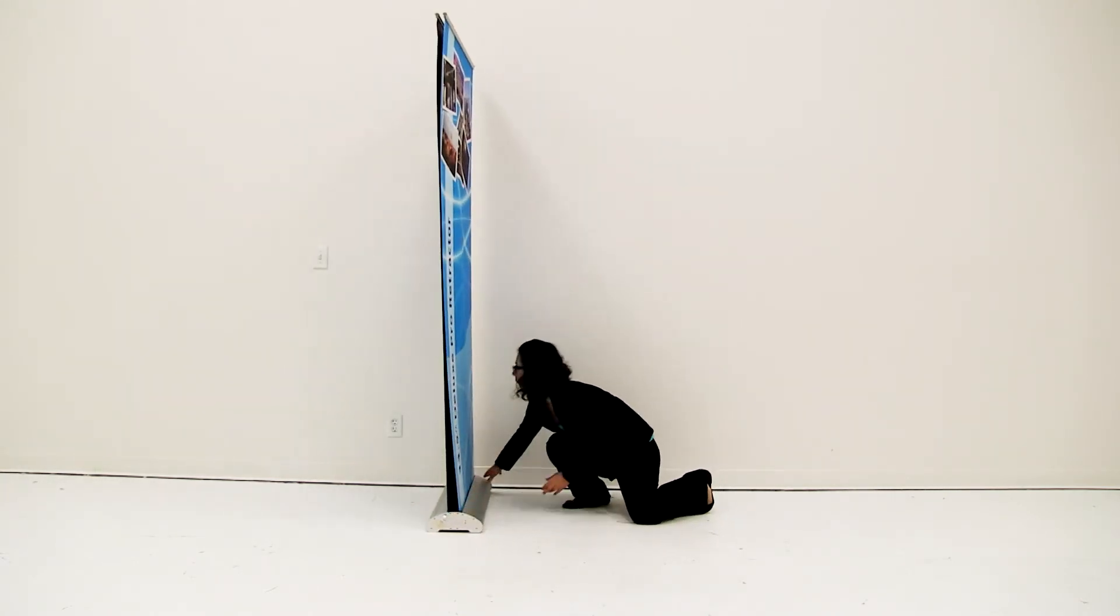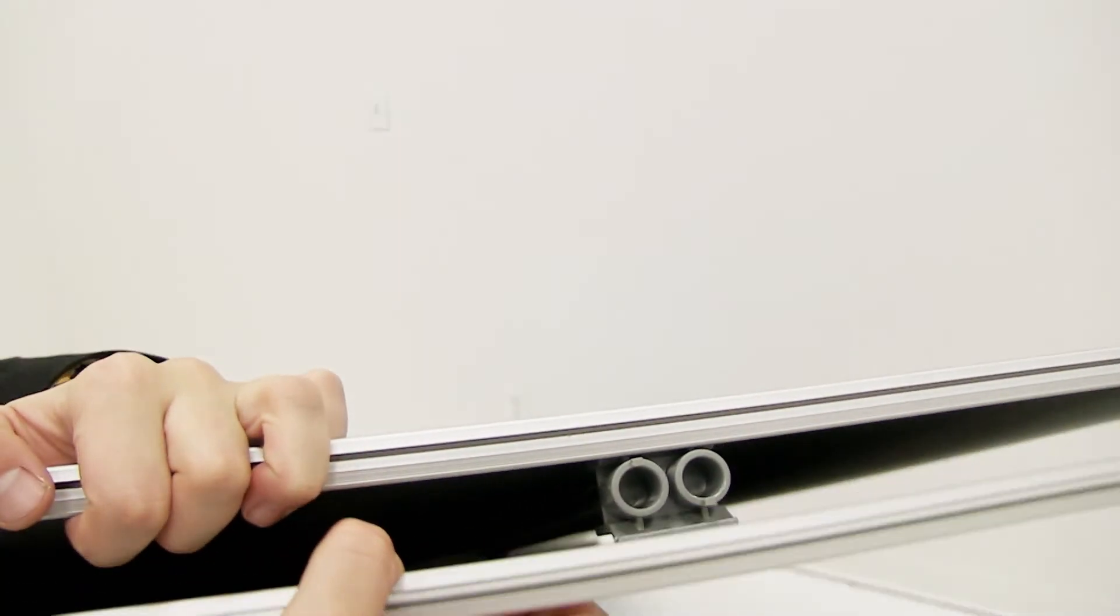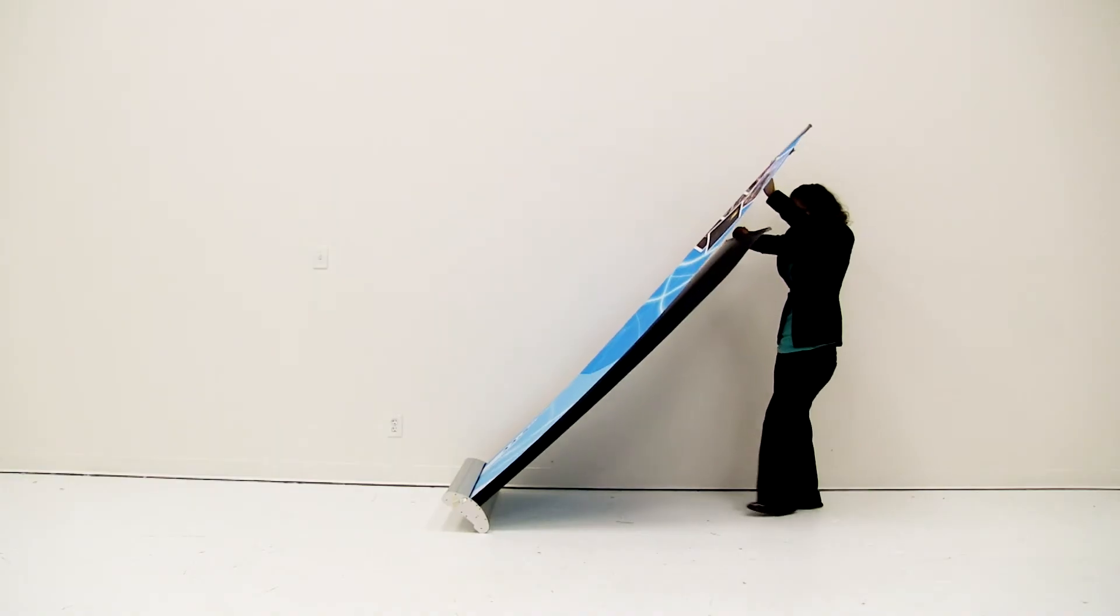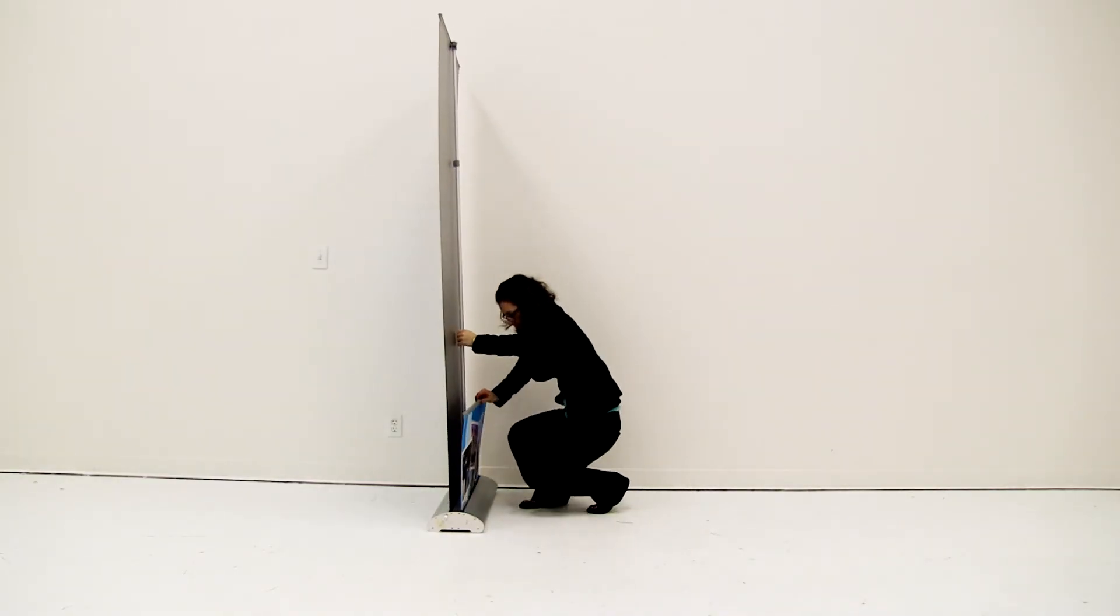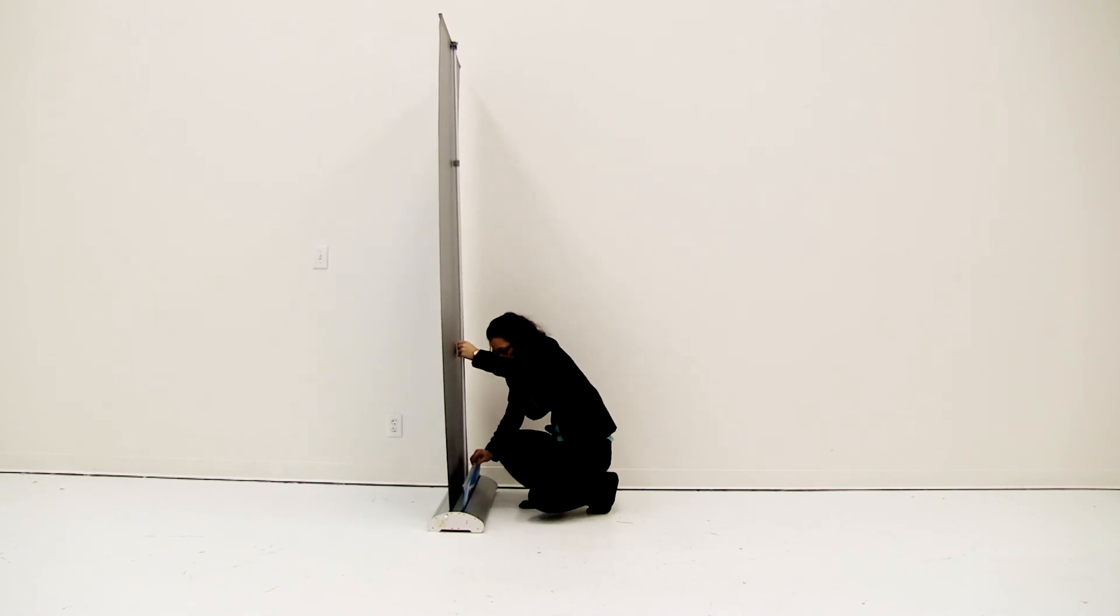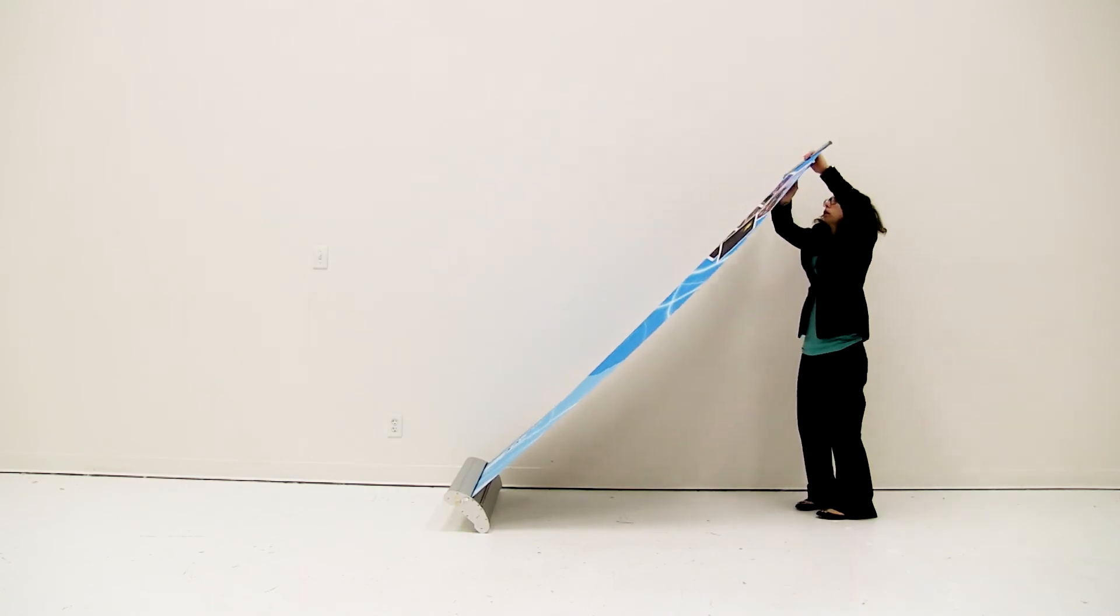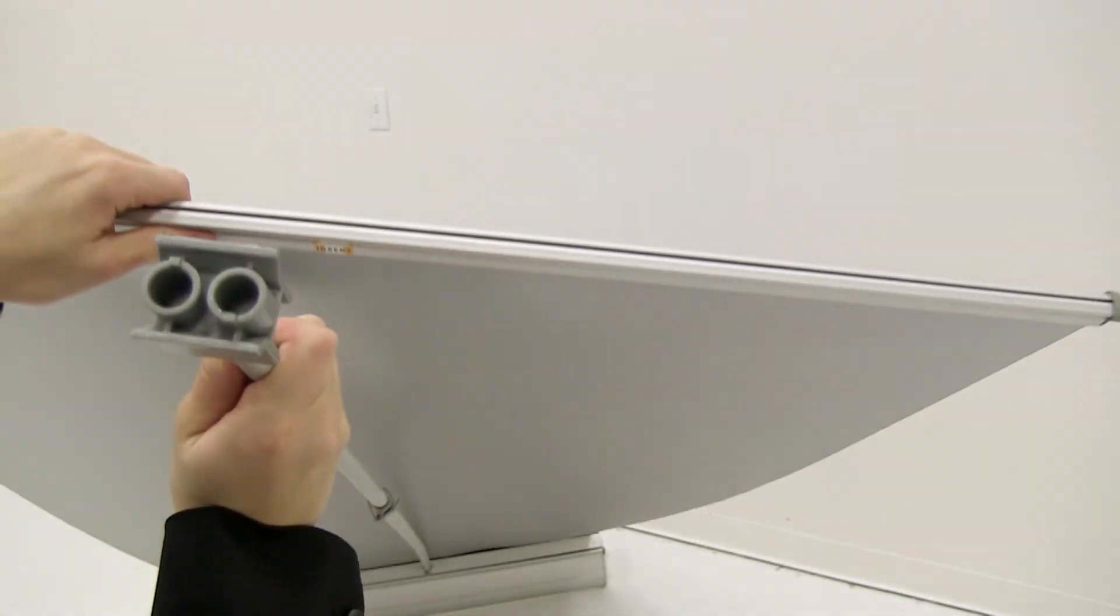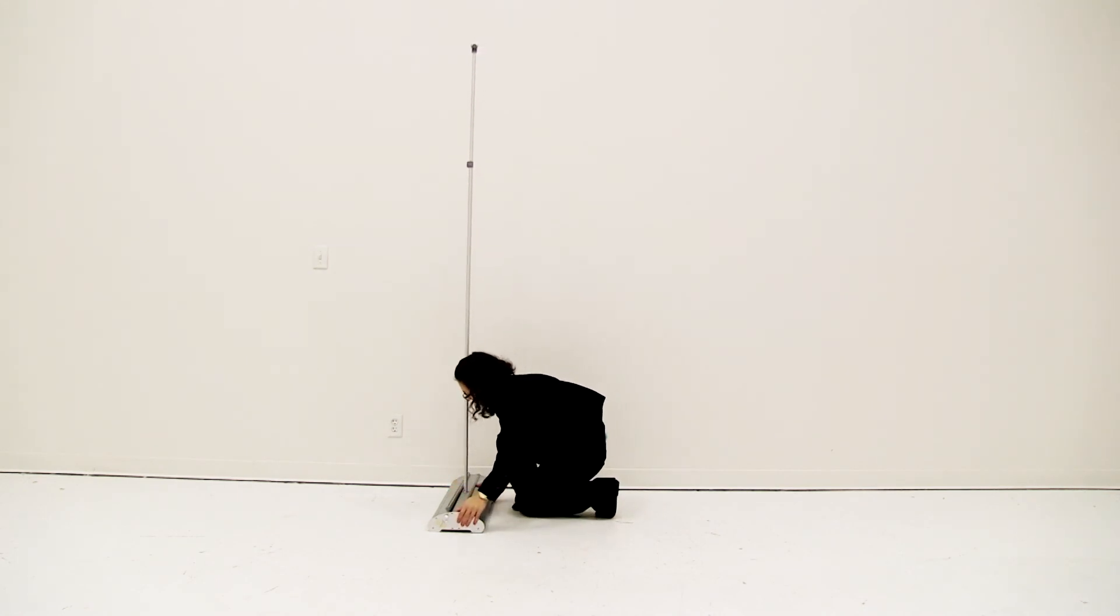To retract the Deluxe Pro graphics, gently tilt the display backwards. Remove one of the graphics from the telescoping pole and gently allow it to retract into the base. Do not let it go. Gently lean the retractor backwards as you remove the second graphic from the telescoping pole. Gently allow the graphic to retract into the base. Do not let go of the graphic.